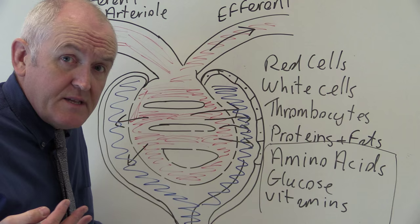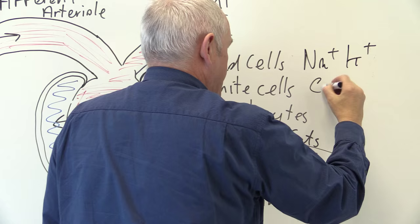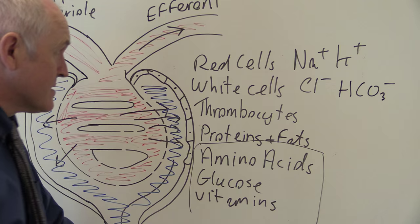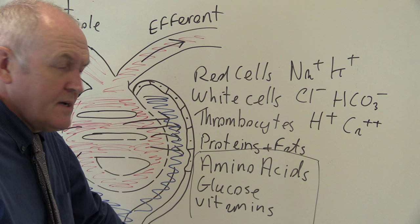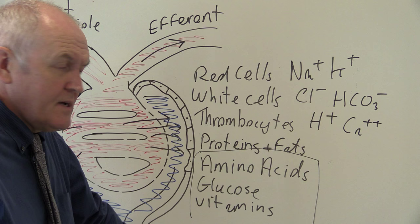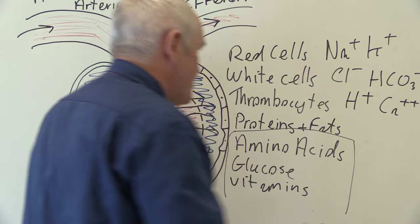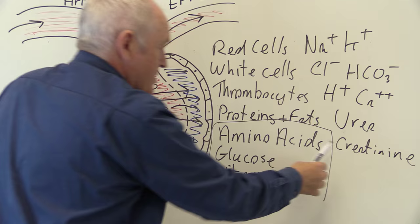There are also electrolytes: sodium, potassium, chloride, ions, bicarbonate ions, hydrogen ions, and calcium. Because these are small they're going to be freely filtered and therefore present in the glomerular filtrate. There are also waste products such as urea and creatinine — relatively small molecules — that are going to be freely filtered into the glomerular filtrate.